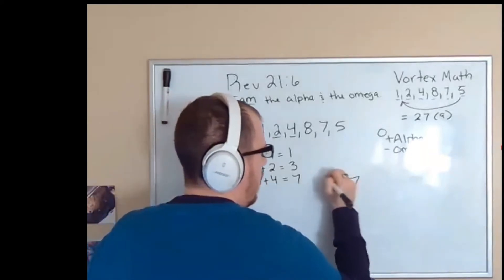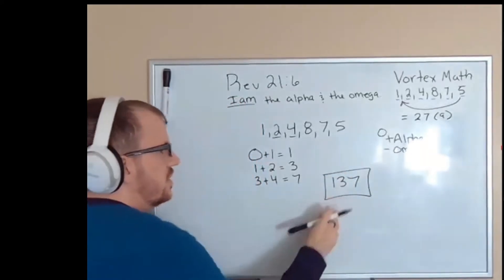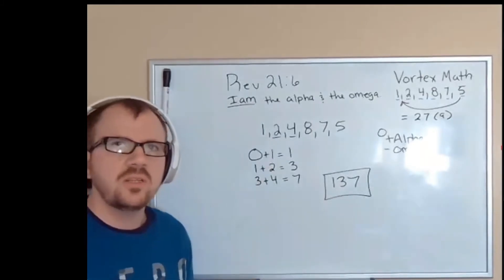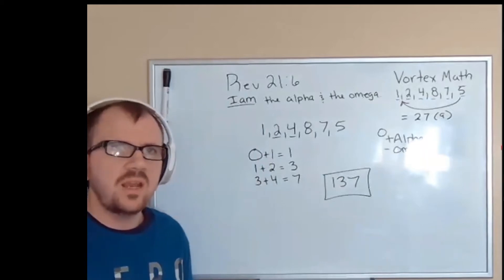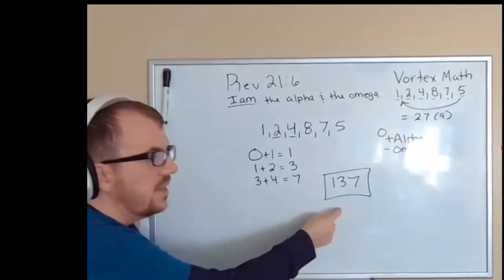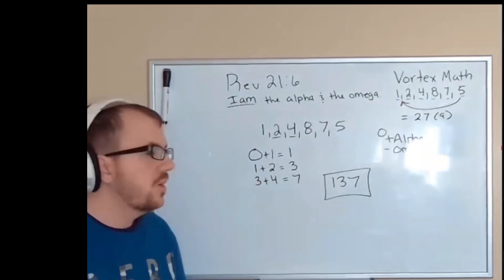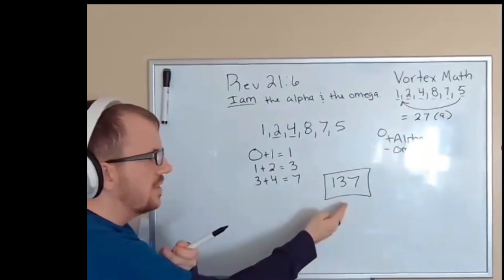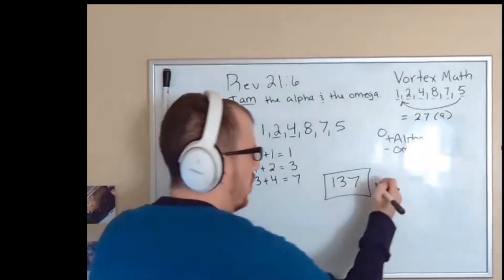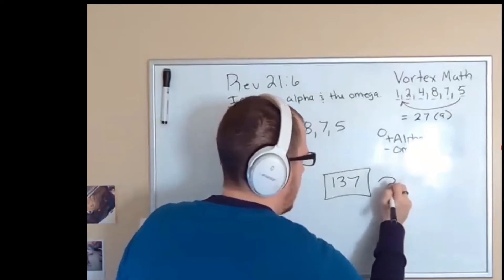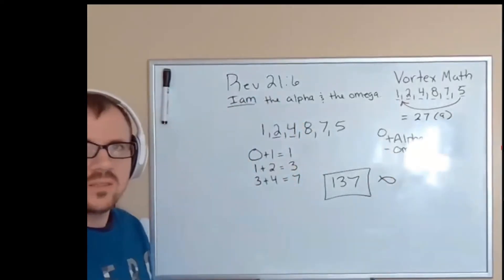When you get into physics, one, three, seven is the number that haunts every single physicist because it's also called the fine structure constant. The fine structure constant, to put it simply, is the point that an atom decides what it wants to be. And we have no idea why that is. According to physics, the charge of an electron sparks off, and then an atom decides what it actually wants to be. We know that that's the number, but we have no idea why it is.